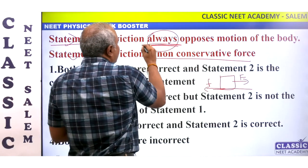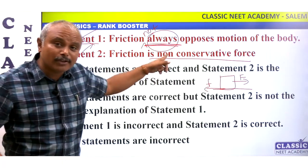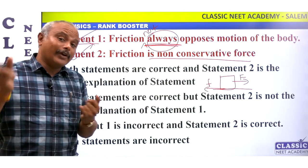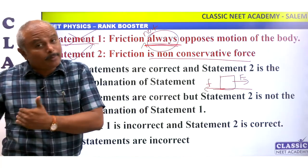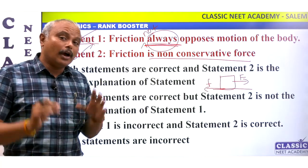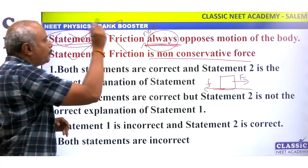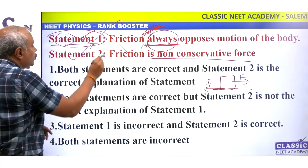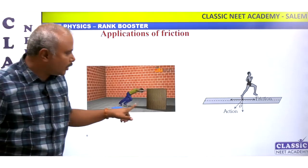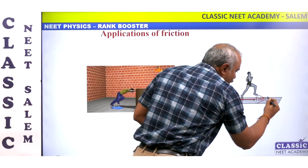Friction does not always oppose the motion of the body. This is not the correct explanation for friction. Statement one is incorrect, and statement two is correct. Friction opposes the relative motion — when you are walking, friction opposes the relative motion of the foot against the surface.